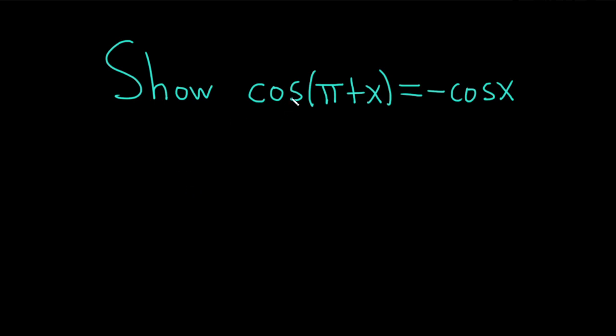Hello, in this video we're going to verify a trigonometric identity. We've got that the cosine of π plus x is equal to negative cosine x. We're carefully going to go through all the steps to show that this identity is true. Let's work through it.